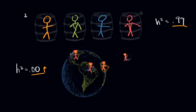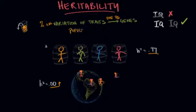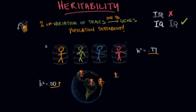Heritability is necessarily dependent on the population studied. The heritability of IQ in the boys-in-barrels example is much higher than in the quadruplets example. To summarize: heritability of a trait is the extent to which variation can be attributed to genes, and it is very dependent on the populations and environments we study.